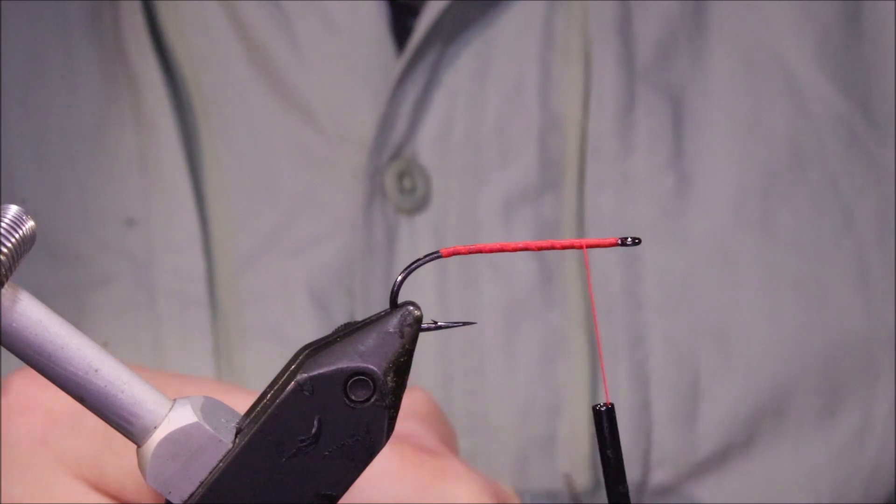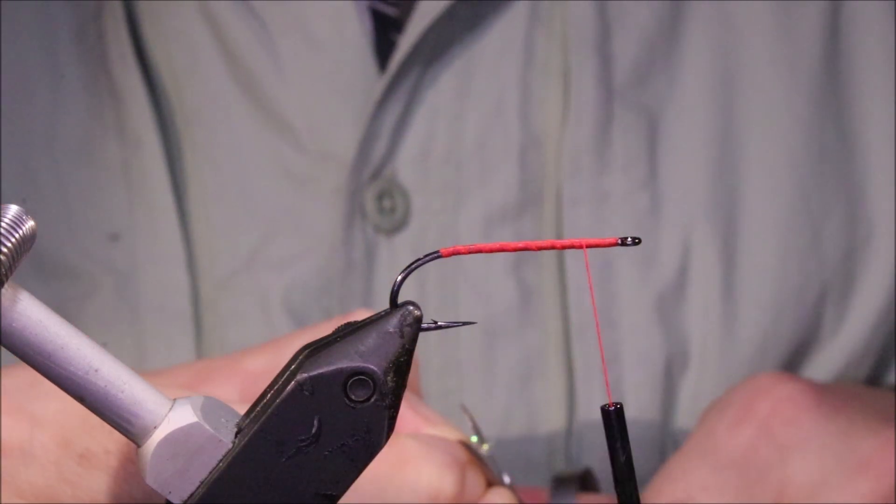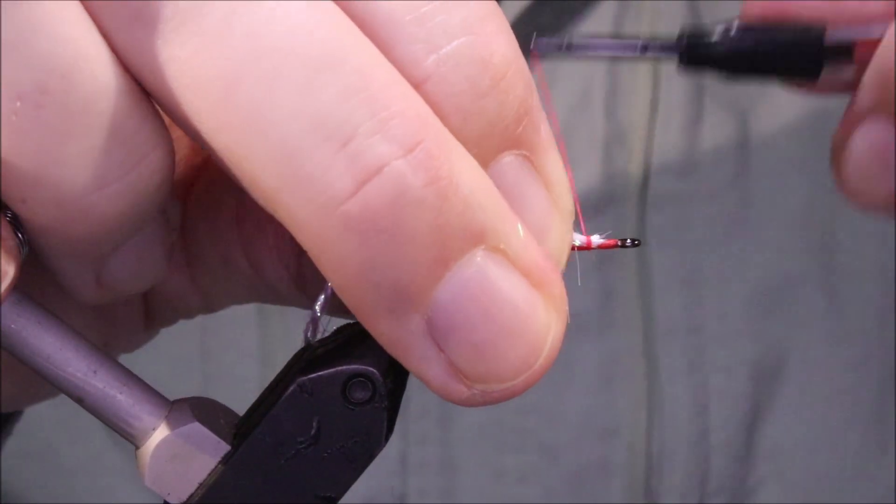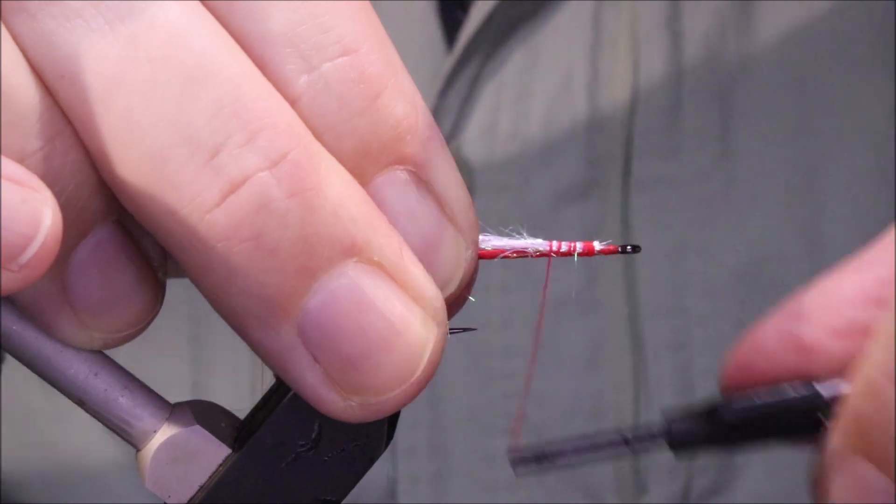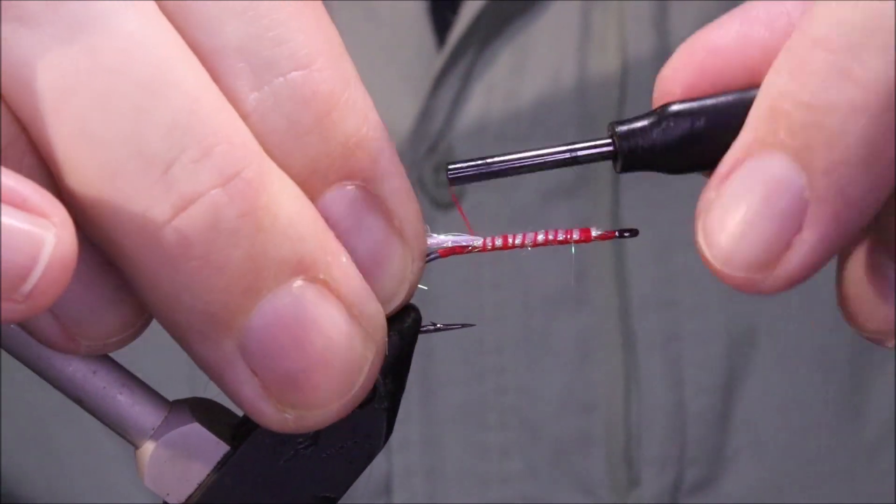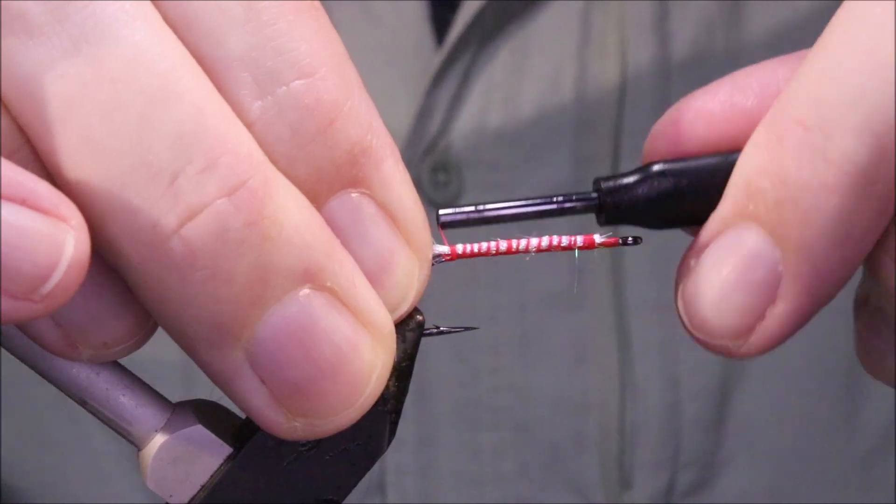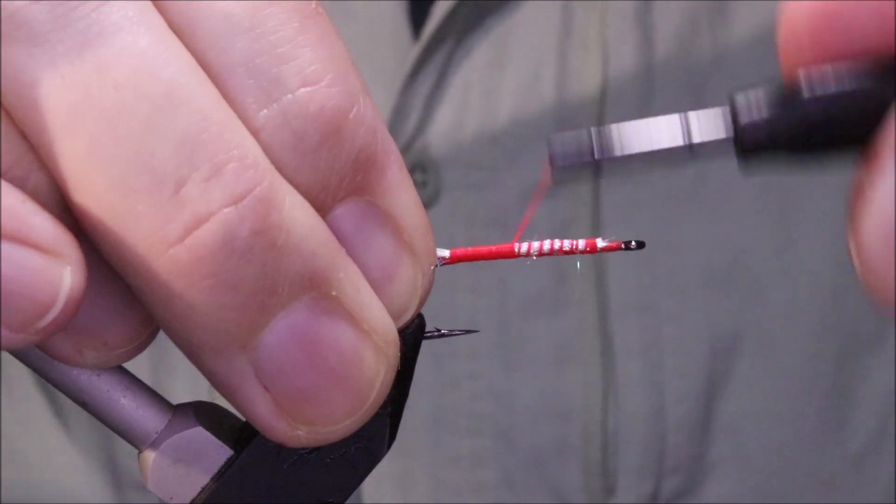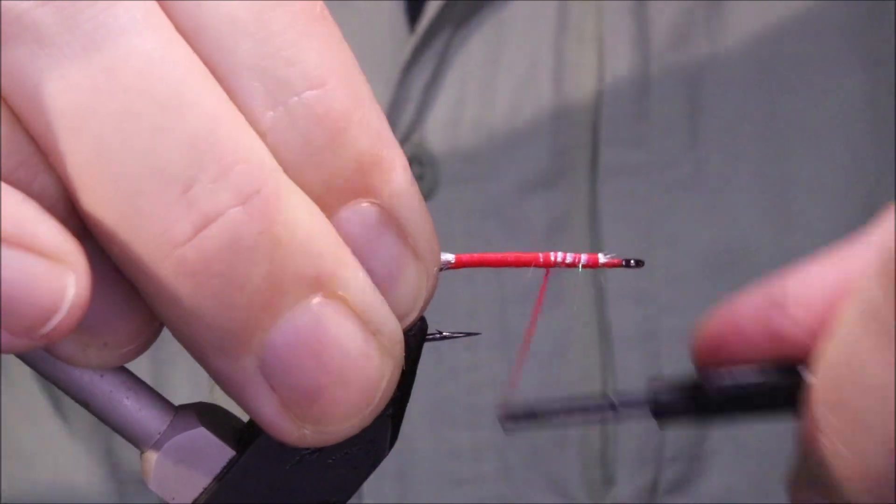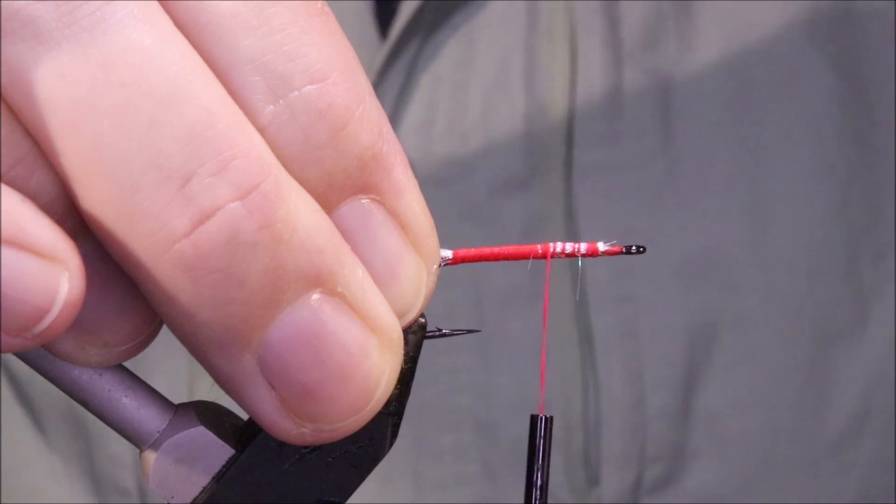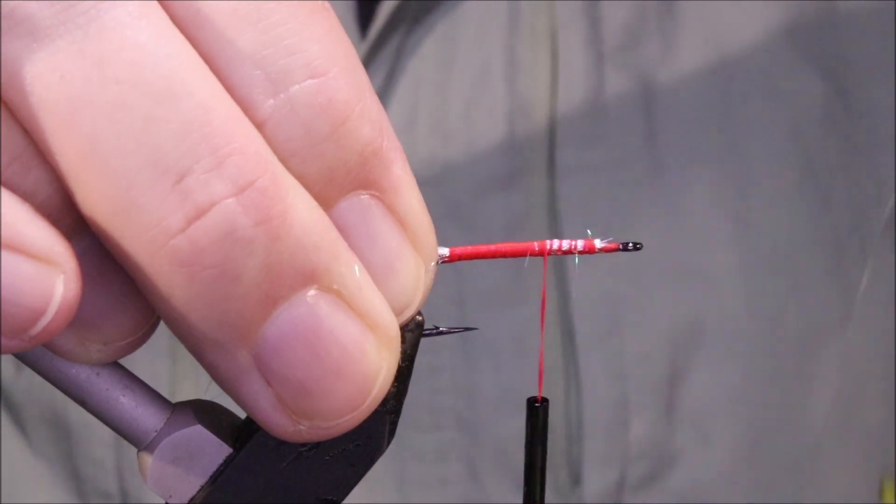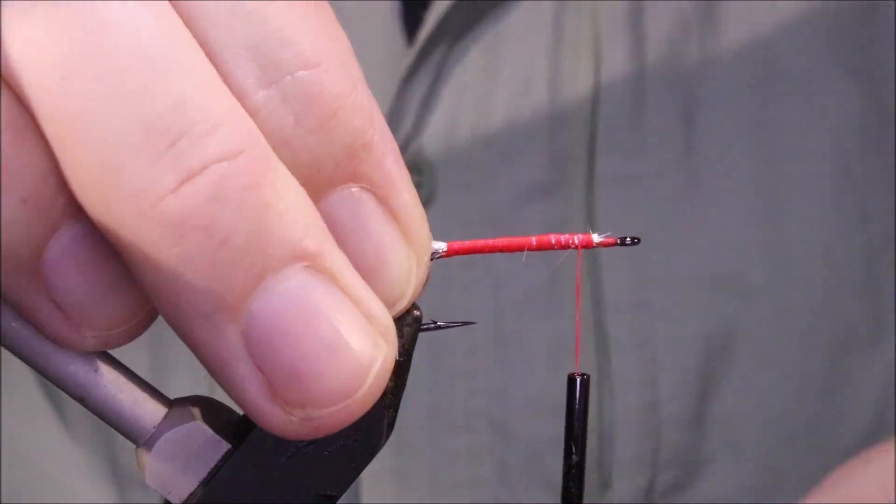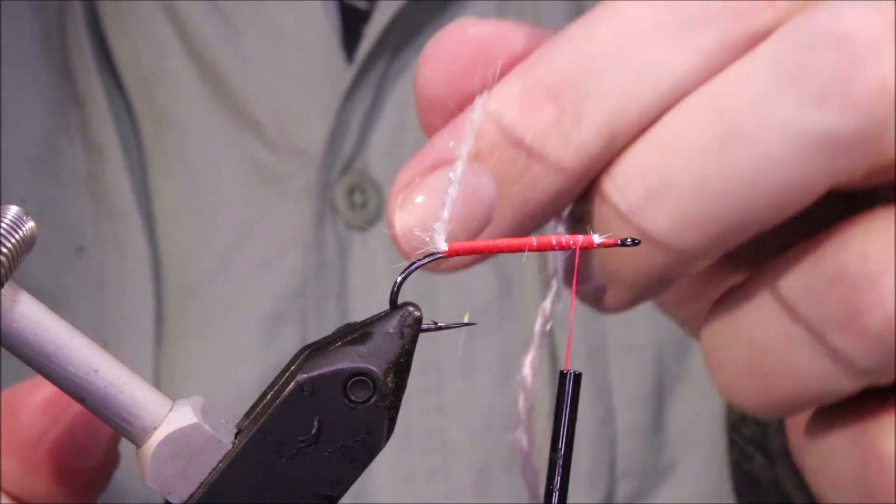Now I've run on some fluorescent red thread. This is Danville's Flymaster Plus and it's a 140, a 6-0. Originally this fly, the body was Pearl Lure Flash, which you can't get anymore. They don't make it, I don't think. I've not seen it for years. You can use Pearl Tinsel if you want. I'm substituting Veniard's Ice Yarn, which is a sort of yarn made out of Angelina type fibers.